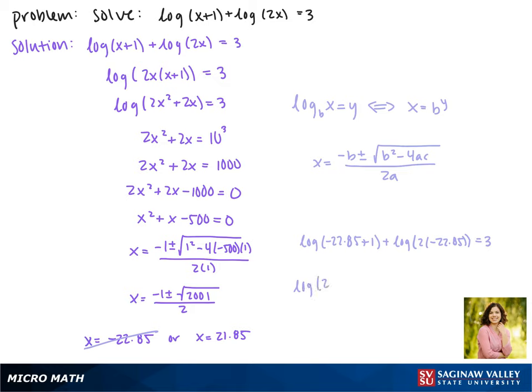Now we have to try the other solution: log(21.85 + 1) + log(2 × 21.85) = 3. Since we're not taking the logarithm of any negative numbers, this is our solution. But we're going to write it in exact form with its square root, so we'll say x = (-1 + √2001) / 2. This is our solution.